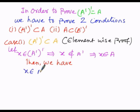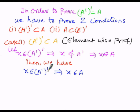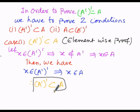Since x does not belong to A', when we remove that complement it becomes x belongs to A. So x ∈ (A')' implies x ∈ A. The element x present in (A')' is also belonging to A. The elements belonging to the LHS are also elements of the RHS. Therefore (A')' is a subset of A. This is condition number 1.